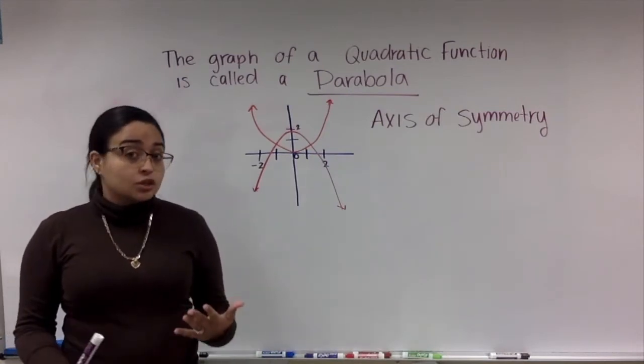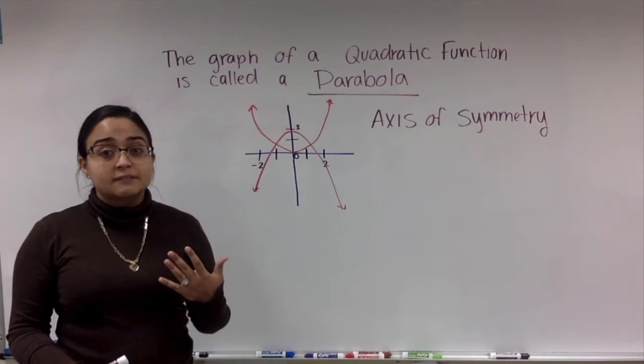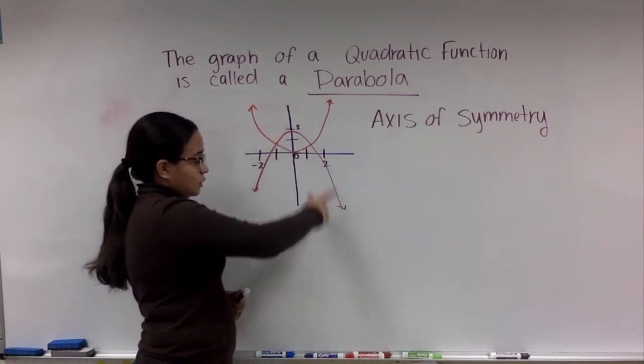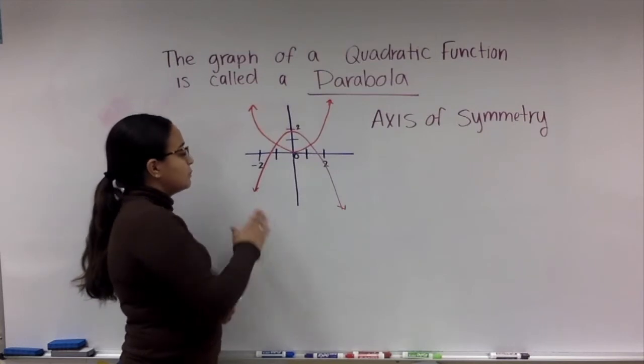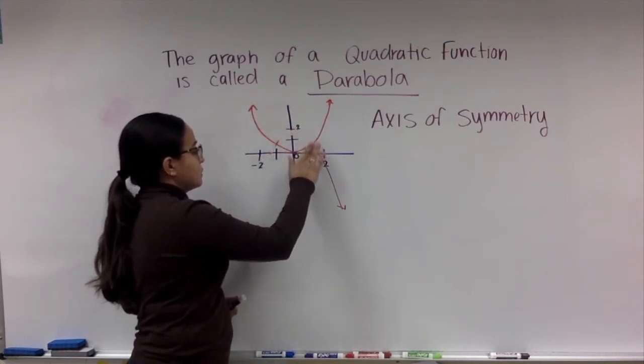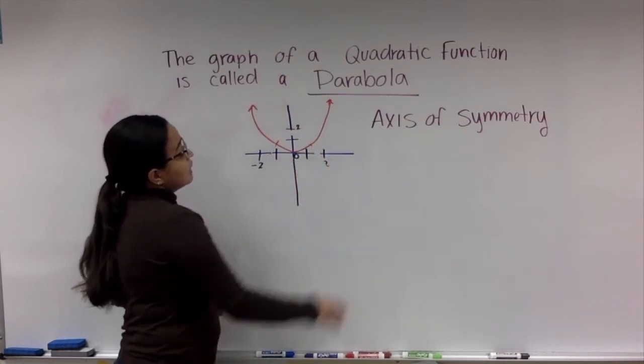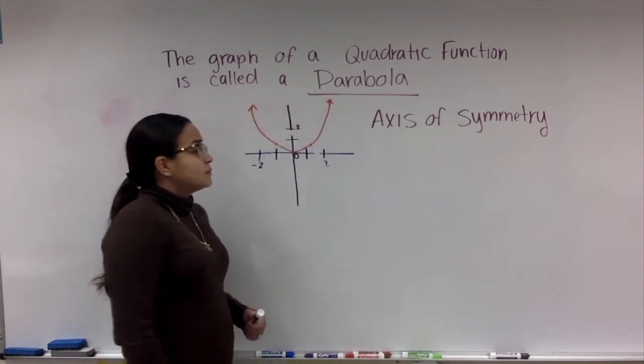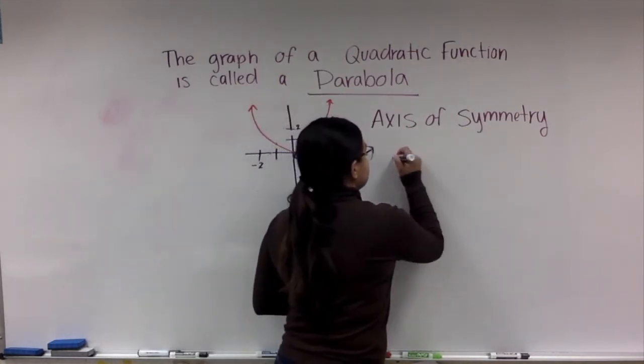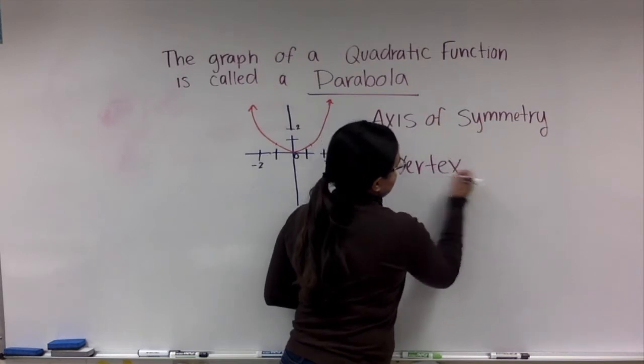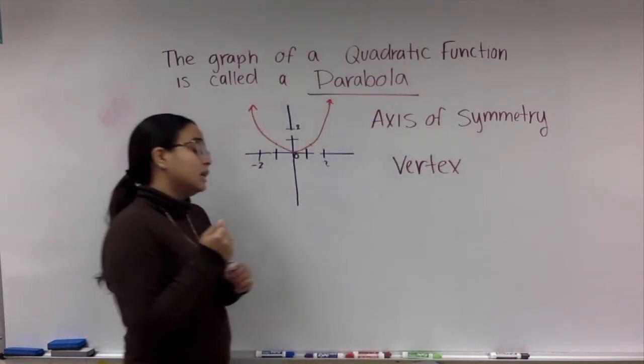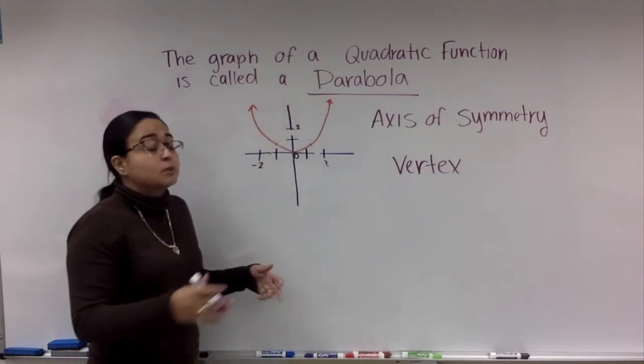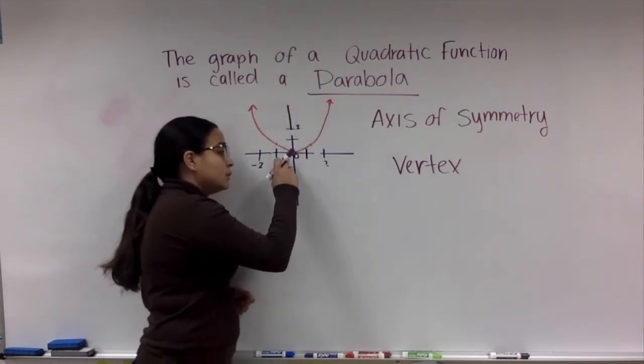Something else that is also important is identifying the vertex. Now what is a vertex? You see how our parabola is U-shaped. Now let's take this one for example. You have a U-shape right there. Now our vertex is actually either our highest or lowest point in our parabola.